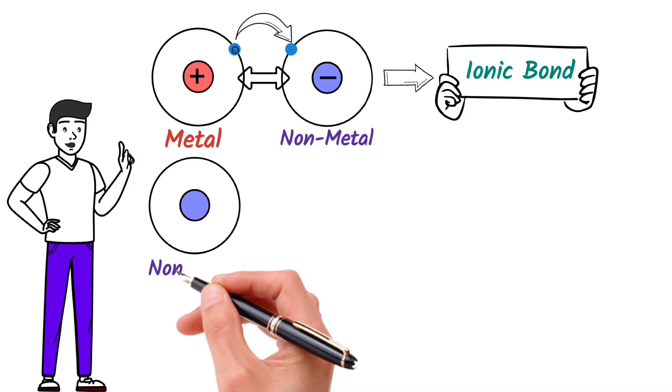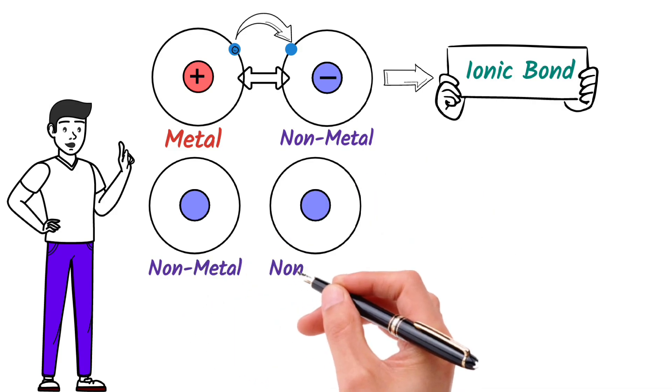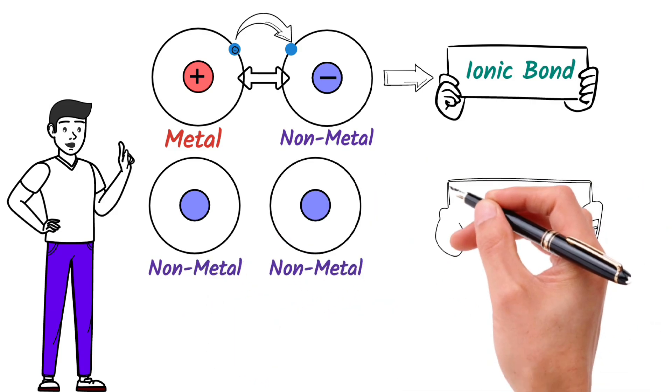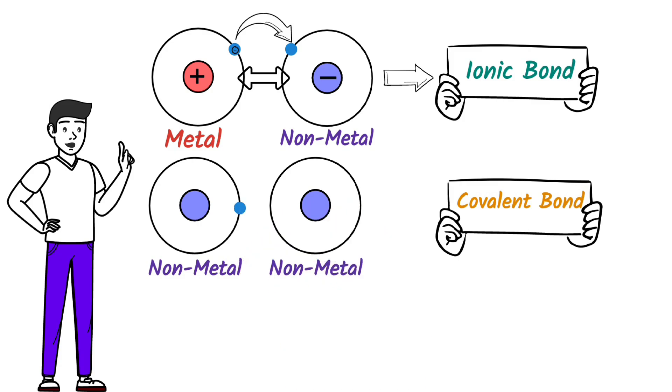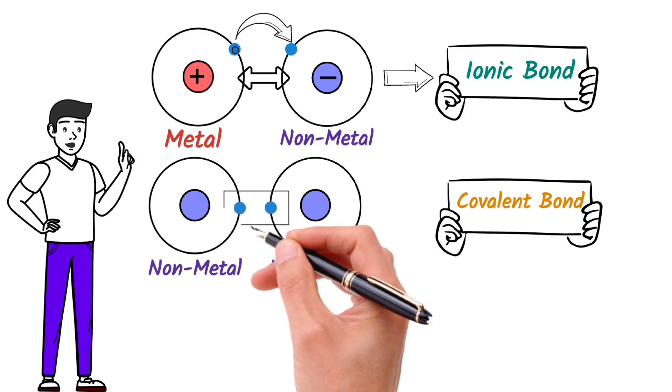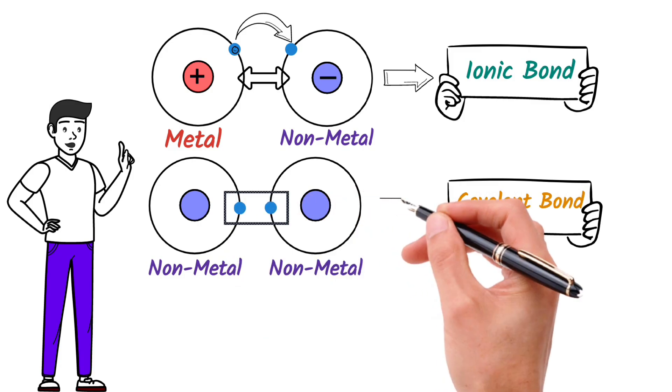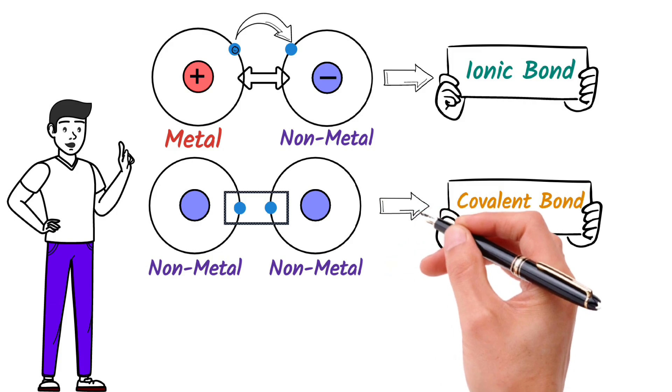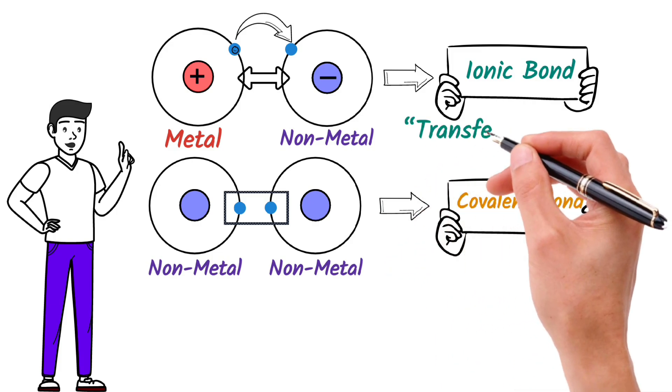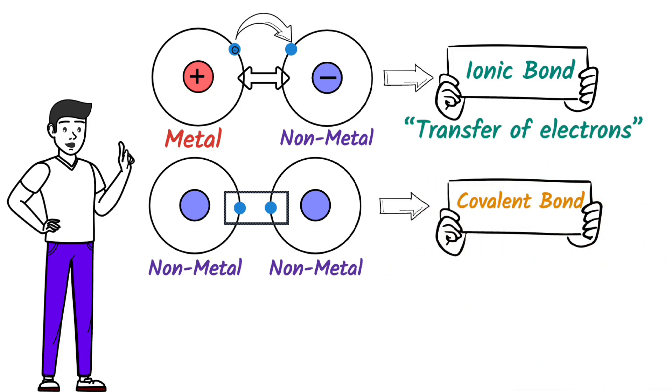When two non-metal atoms come together, they form a covalent bond. In covalent bonding, atoms share electrons to achieve stability. So the bond formed by mutual sharing of electrons is known as a covalent bond. Ionic bond is formed by transfer of electrons, while covalent bond is formed by sharing of electrons.